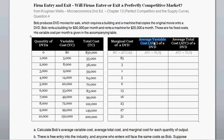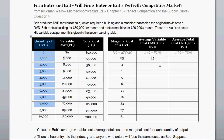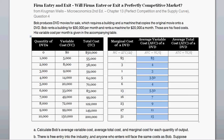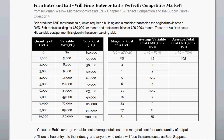Next is average variable cost, which equals variable cost divided by quantity. The average variable cost for 1,000 DVDs produced is $5,000 divided by 1,000, or $5. Moving on to average total cost, we take total cost — in this case $55,000 — divided by quantity, 1,000, giving an average total cost of $55. We grind out the solutions for the remaining rows using the same approach.